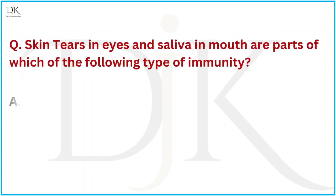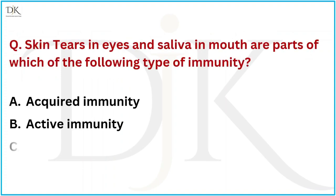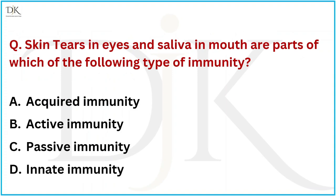Skin, tears in the eyes, and saliva in the mouth are parts of which type of immunity? The right answer is Innate Immunity.